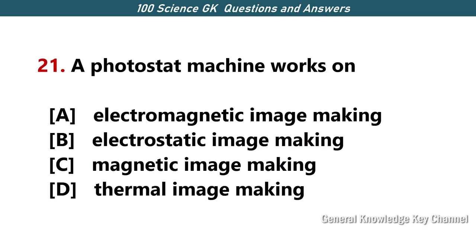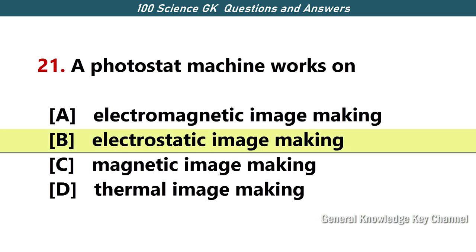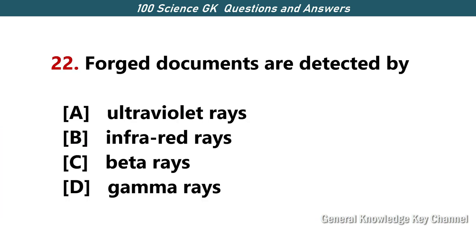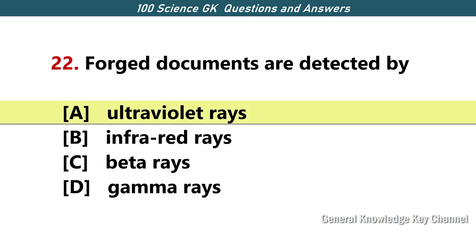A photostat machine works on — Answer B — electrostatic image making. False documents are detected by — Answer A — ultraviolet rays.